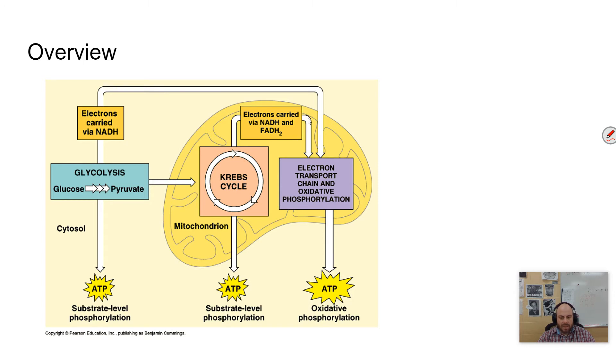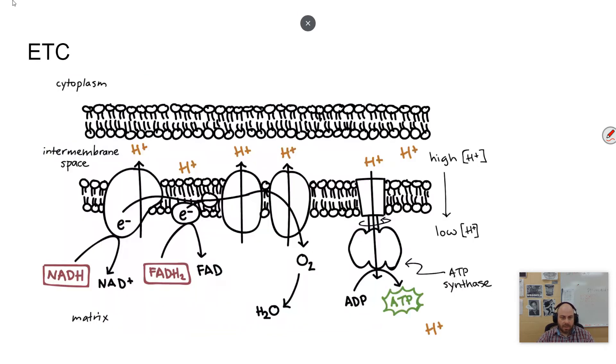And then lastly, the electron transport chain, which happens in the inner membrane of the mitochondria, or for organisms that don't have a mitochondria, it will happen on the cell membrane. And the big thing, the big idea here is using those electron carriers to power chemiosmosis. Remember, chemiosmosis is the creating a proton gradient to power ATP synthase to make ATP through this process called oxidative phosphorylation. Now that's a whole lot, so let's break that down in a little bit more easier chunks to manage.